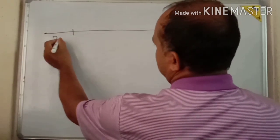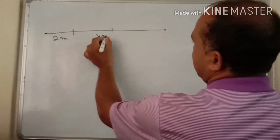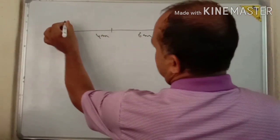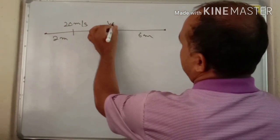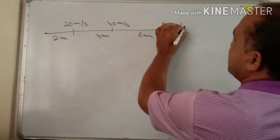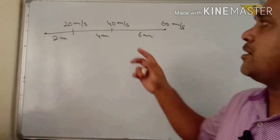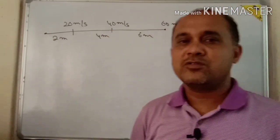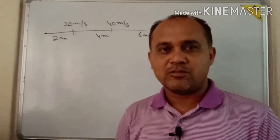So, it is still a minute of the work. It is still 20 meters per second, it is still 40 meters per second, and it is still 60 meters per second. Let's see the work. We'll have the work. I can see the work.